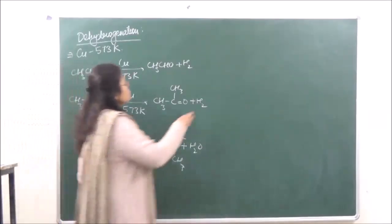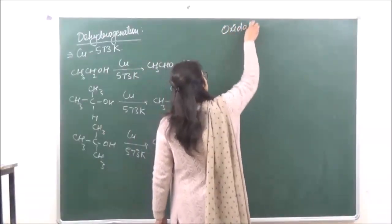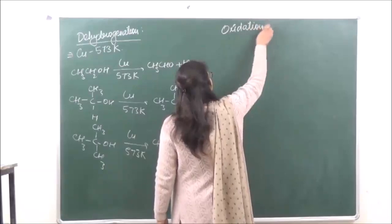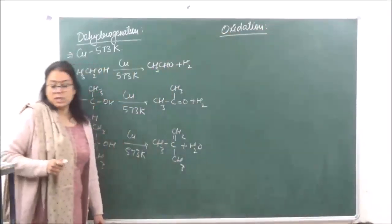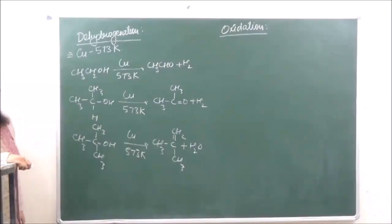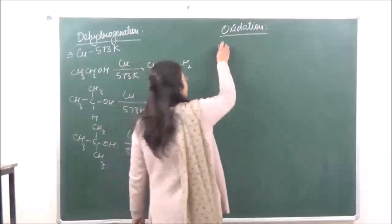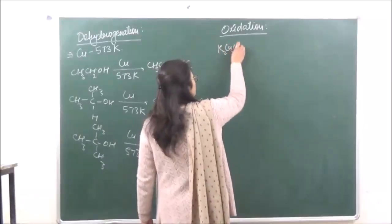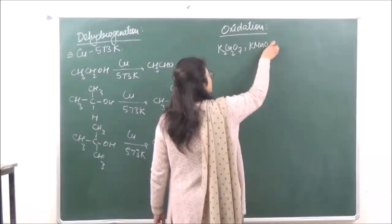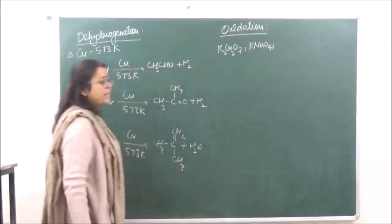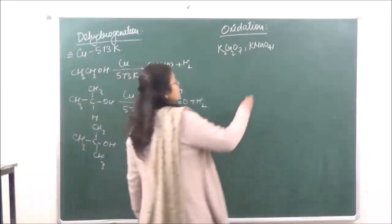The next reaction we are going to discuss is the oxidation reactions. Over here we use various oxidizing agents — for example, we can use K₂Cr₂O₇, we can use KMnO₄ (potassium permanganate).